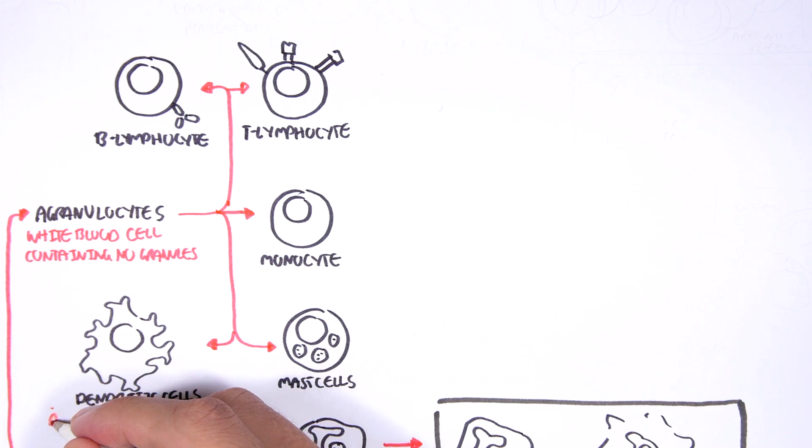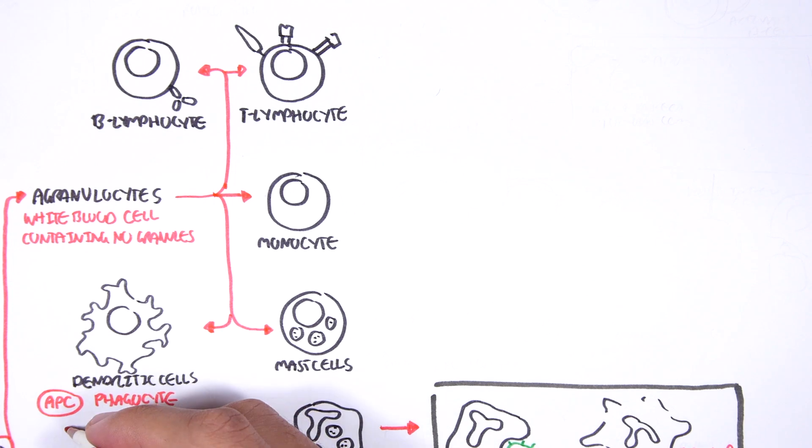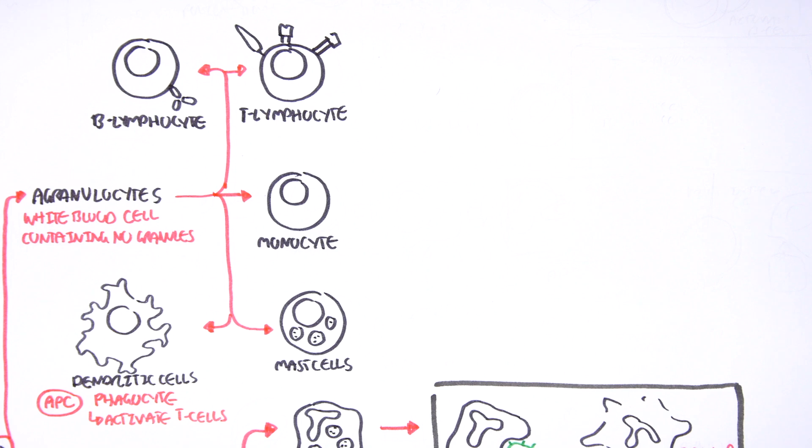Dendritic cells are extremely important cells in the innate immune response, the first line of defense. They are phagocytes and are the main antigen-presenting cells, and antigen-presenting cells means that these cells are cells that activate T cells, the T lymphocytes.